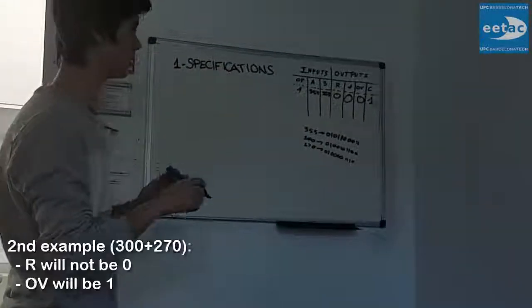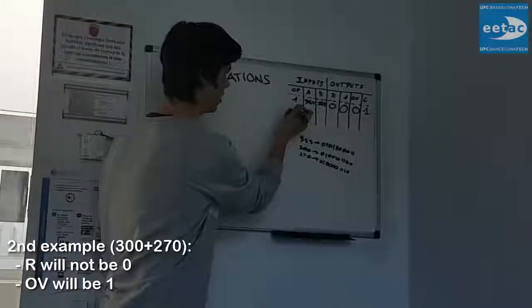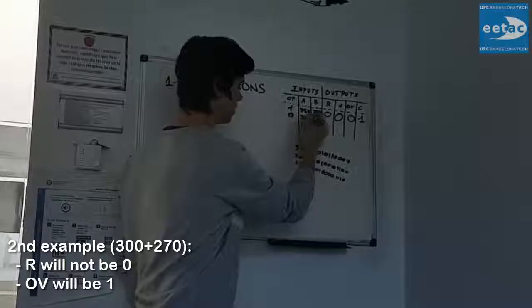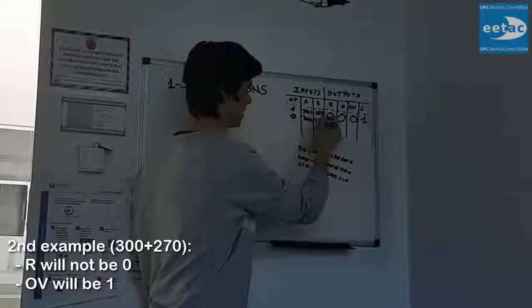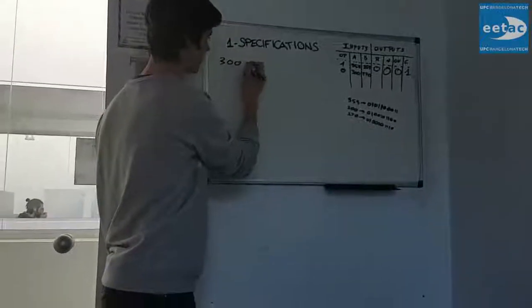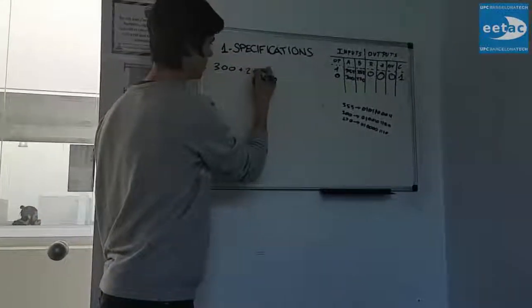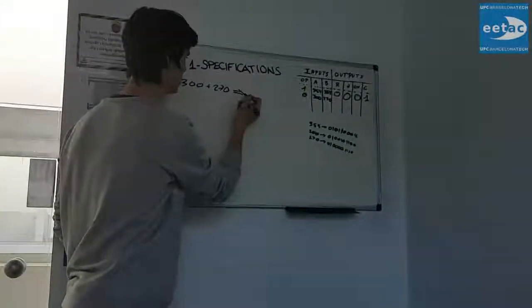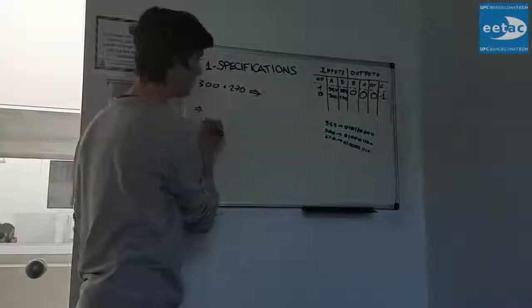In the second example we have 0 in operation, in A we have 300, and in B, 270. 300 plus 270 are equals to, in binary...